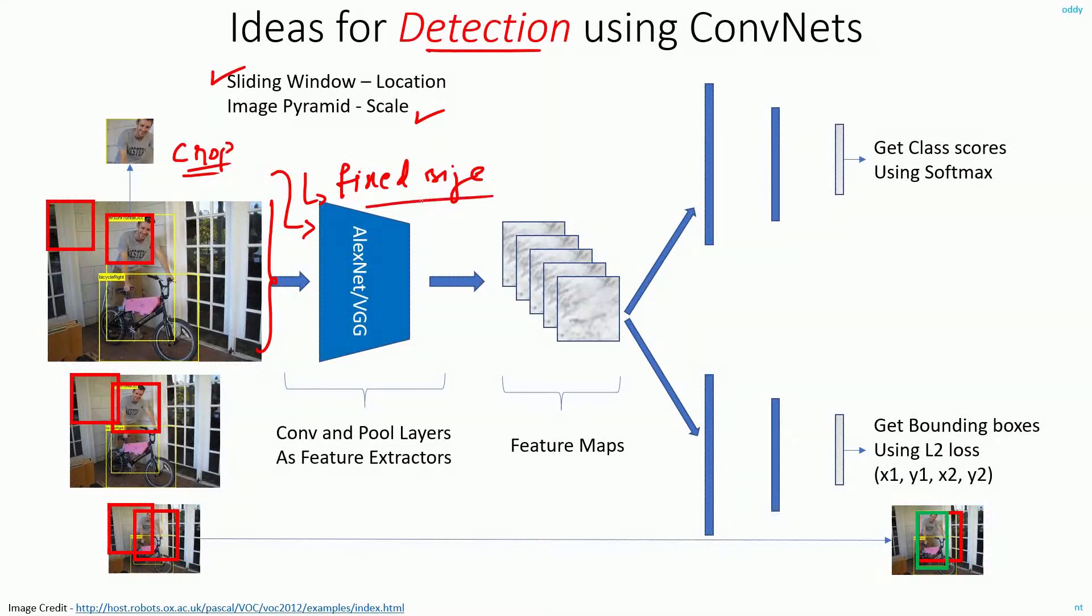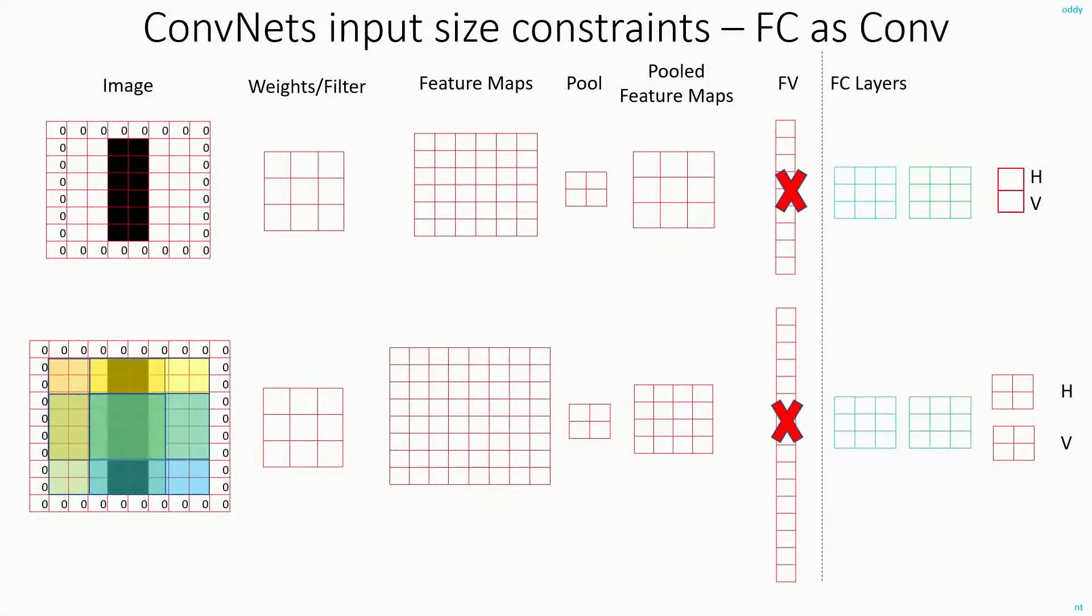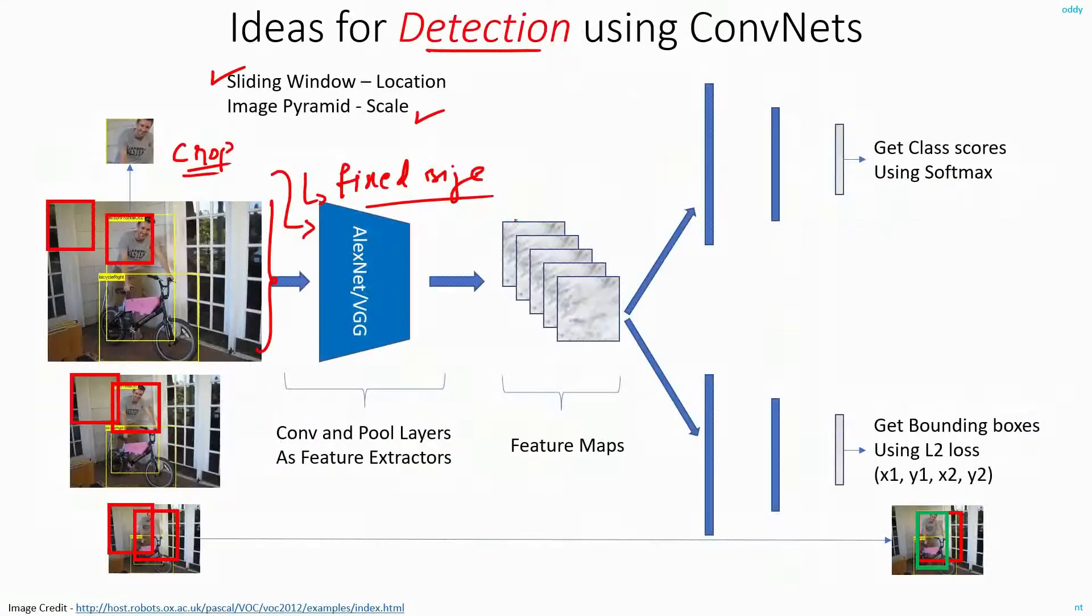But this constraint, the fixed size constraint, was because of the fully connected layer. But by re-implementing the fully connected layers as convolution operation, I removed this restriction.